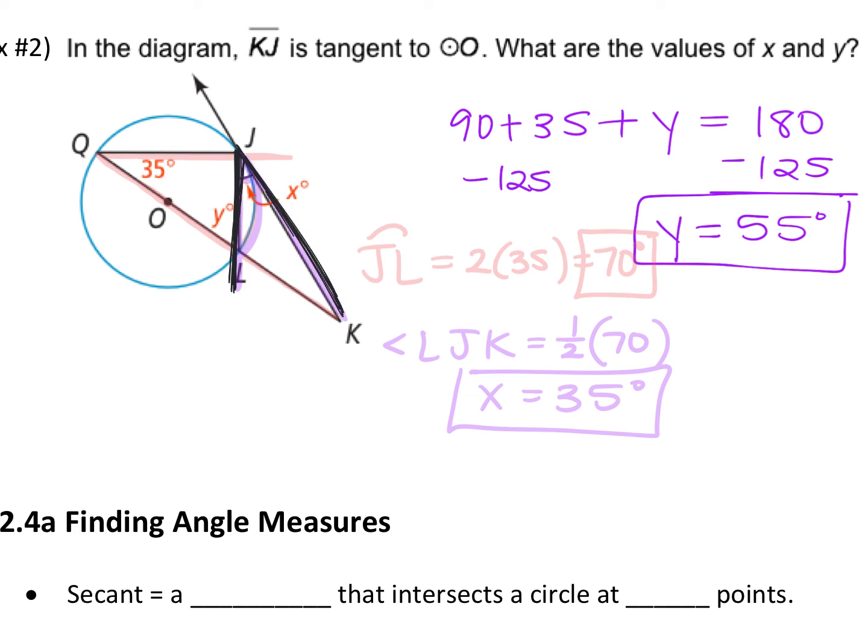One's a tangent, one's a chord. The arc that it intercepts is this arc. Yes. That intercepted arc is twice as much as the inscribed angle. Yes. So this angle, which is our X, is half of that arc. And we said that arc, because this is 35, that arc is 70. So if the arc is 70, X is half of that, so 35.